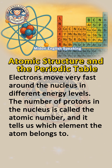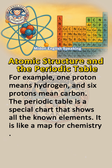The number of protons in the nucleus is called the atomic number, and it tells us which element the atom belongs to. For example, one proton means hydrogen, and six protons mean carbon.